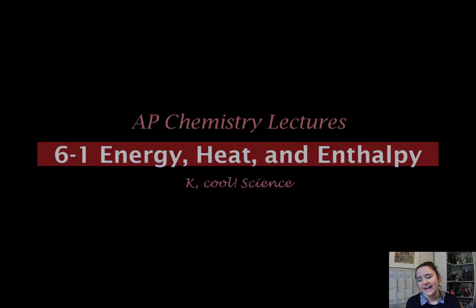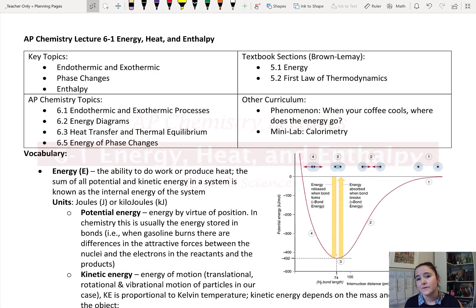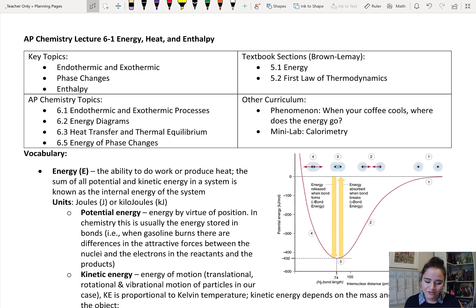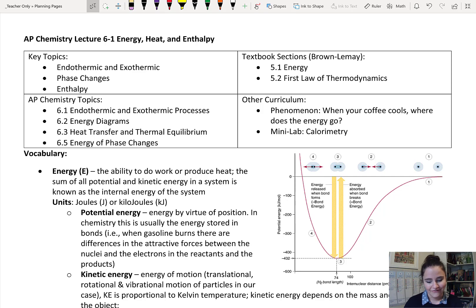Hey guys, Ms. Peterson here, and this is AP Chemistry Lecture 6-1, where we're going to be starting our unit on thermodynamics and thermochemistry. We're going to be talking about energy, heat, and enthalpy, and how all those terms are kind of the same thing, but kind of not. We'll talk about phase changes and enthalpy. This corresponds to AP Chemistry Topics 6.1, 6.2, 6.3, and 6.5. In your textbook, you can find more information in Chapter 5.